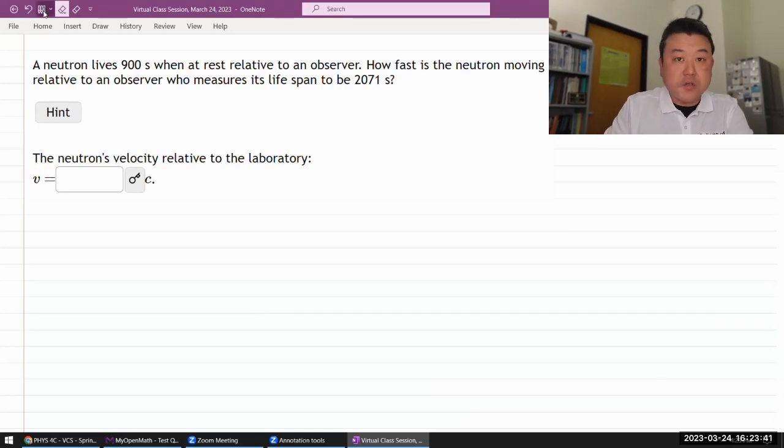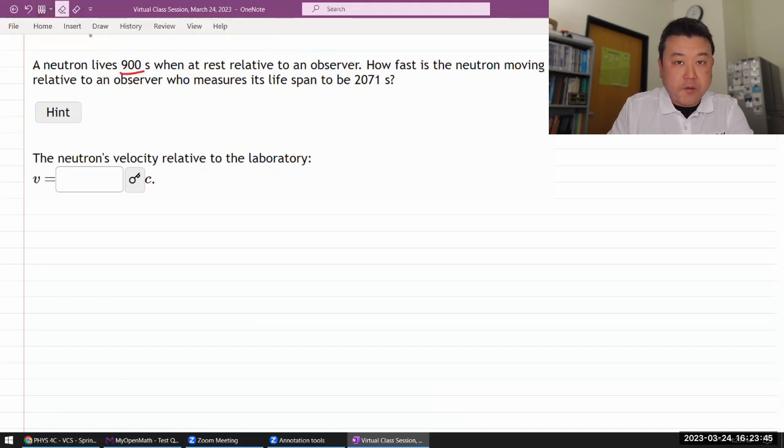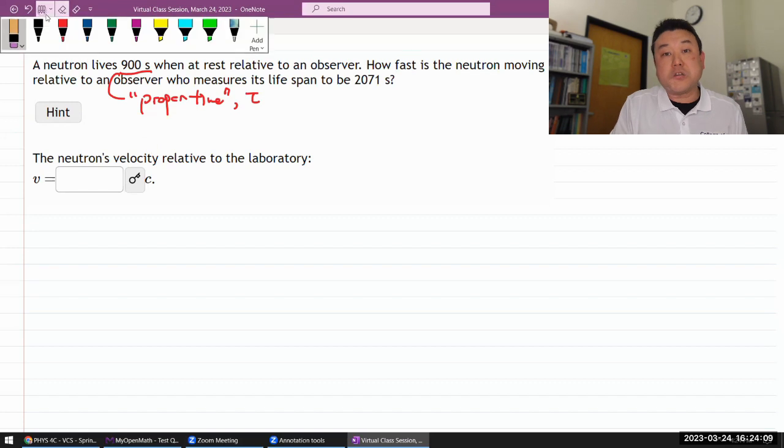This question says a neutron lives for some number of seconds when it rests relative to an observer. This is describing what's called a proper time, which I will most commonly indicate using the letter tau, Greek letter tau. Sometimes a textbook might use T sub P, but I'm going to use tau because that's the one I'm most accustomed to using.